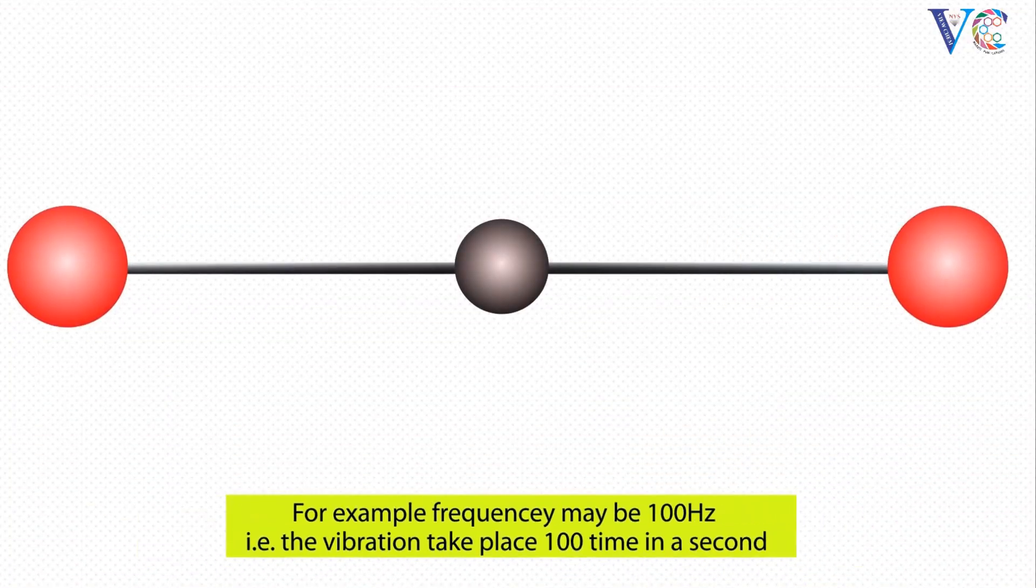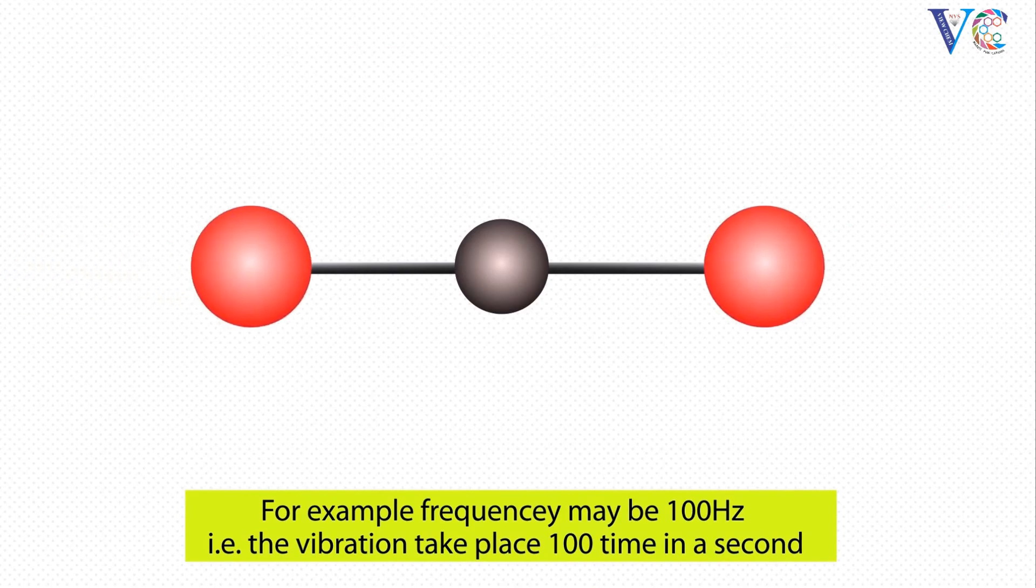A particular bond vibrates with a characteristic frequency, which is called the natural frequency. When light of the same frequency falls on such a molecule, it will be absorbed by that molecule.